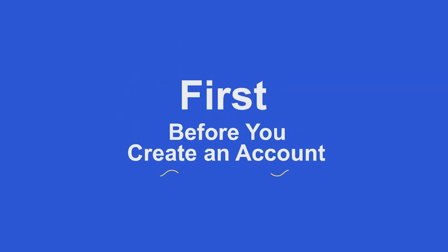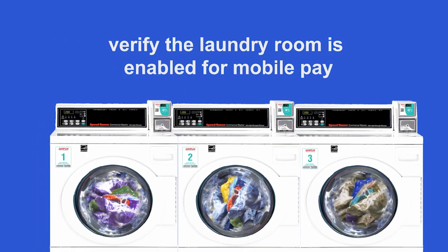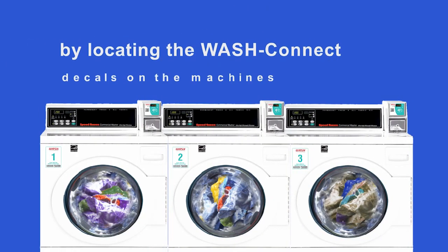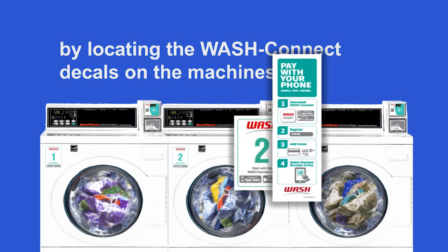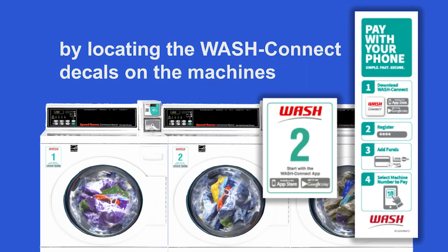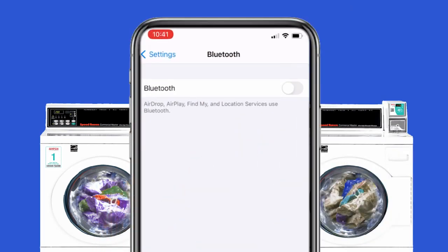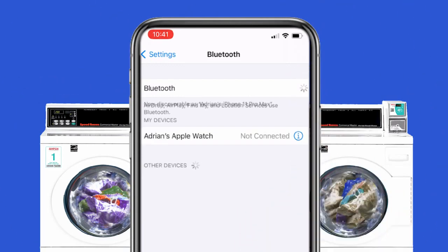First, before you create an account, verify that the laundry room is enabled for mobile pay by locating the WashConnect decals on the machines. Next, while inside the laundry room, turn on your device's Bluetooth.